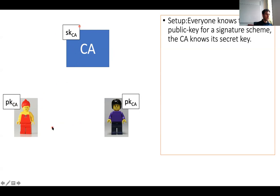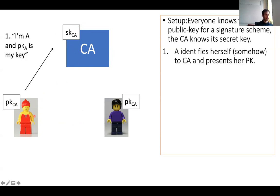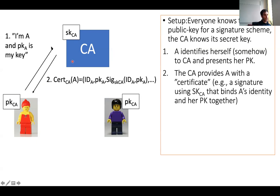When users want to communicate, Alice contacts the certificate authority and gets a certificate. Alice generates her own public key and secret key for some encryption or signature scheme, contacts the CA, and somehow identifies herself — physically proving her identity to the CA. Once the CA is persuaded that Alice is who she claims, it binds Alice's identity together with her public key PKA in what is known as a certificate. The certificate is essentially a signature under the CA's secret key of the identity IDA and the public key PKA.